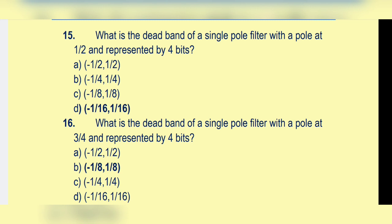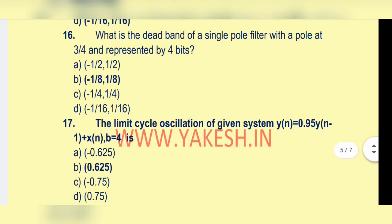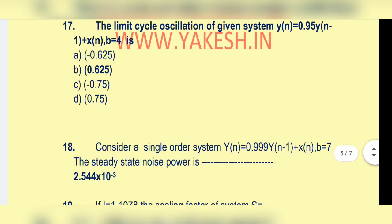Option d: minus 1/16 to 1/16. What is the dead band of a single pole filter with a pole at 3/4 and represented by 4 bits? Option b: minus 1/8 to 1/8 is the answer.